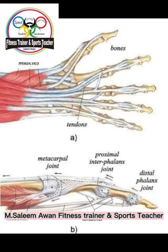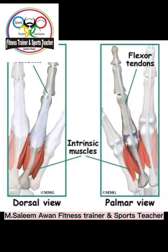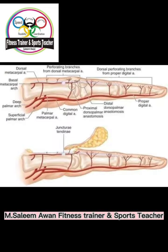Now let us list the distal row bones. From lateral to medial side, the first one is the trapezium. Next to the trapezium is the trapezoid — the small trapezoid-shaped bone. Next to the trapezoid is the capitate, a slightly larger bone. And the last one is the hamate.